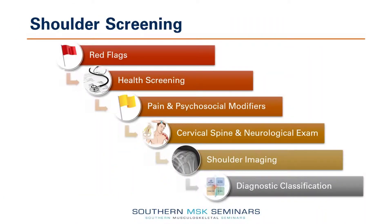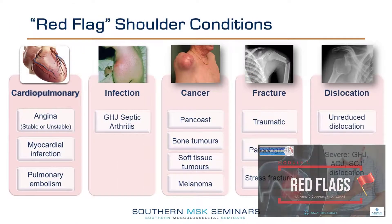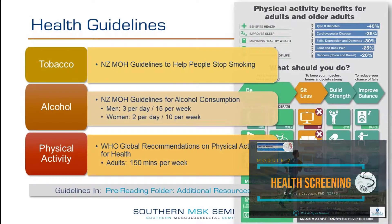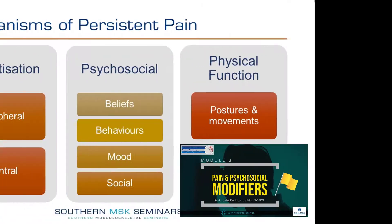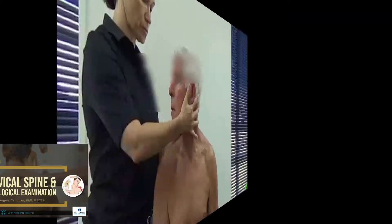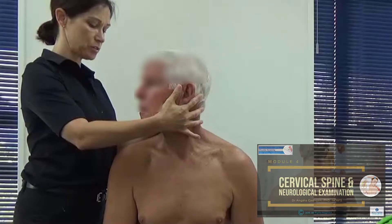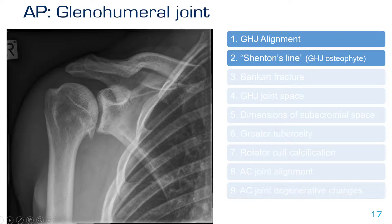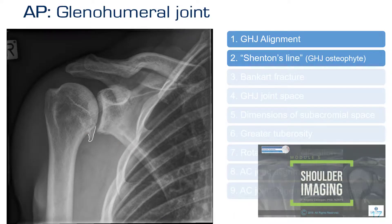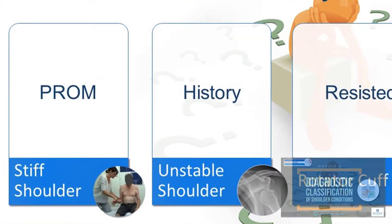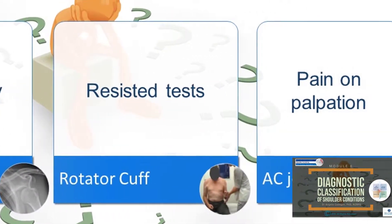The modules are designed to help you more effectively screen patients for signs and symptoms of serious medical pathology, screen the patient for health lifestyle risk factors, identify causes of persistent pain and psychosocial modifiers, perform an effective cervical spine and neurological examination, and to appropriately refer for and interpret shoulder imaging, and make a basic diagnostic classification of shoulder conditions.